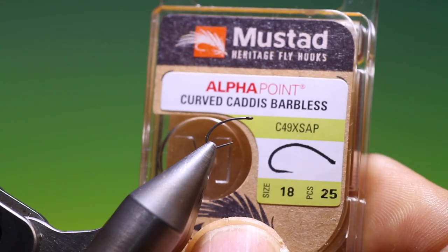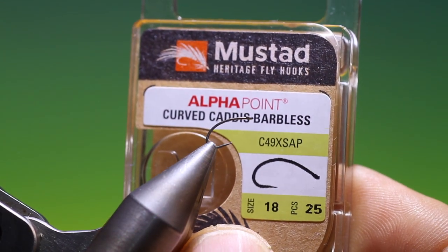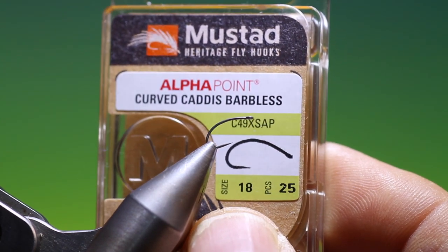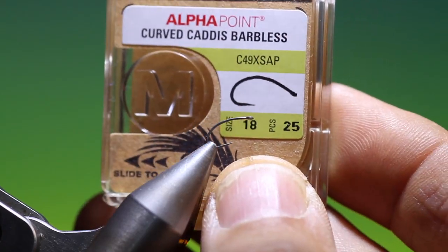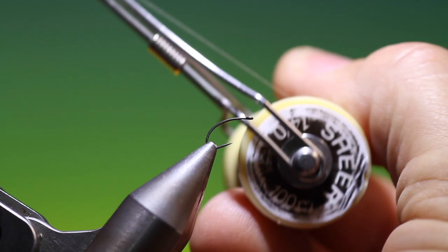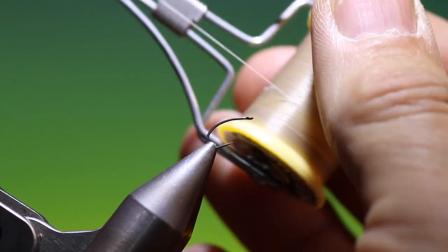Okay, we'll start with the Mustad Heritage Curve Caddis Barbless C49XAP size 18. I do tie this in much smaller sizes but I don't think I'd manage to get close enough with the camera. So we've got Sheer 40 nought tan.